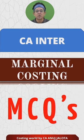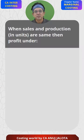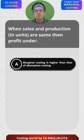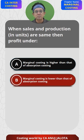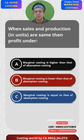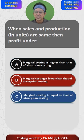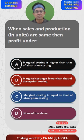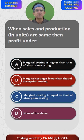Marginal costing MCQs. When sales and production are the same, then profit under marginal costing is: A) higher than absorption costing, B) lower than absorption costing, C) equal to absorption costing, or D) none of the above. Think of the correct answer.